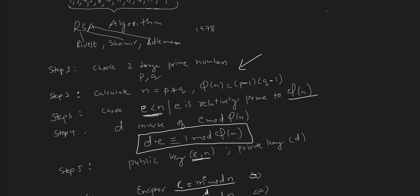RSA algorithm is one of the important algorithms in cryptography. It's known as RSA because it was proposed by three computer scientists: Rivest, Shamir, and Adleman.